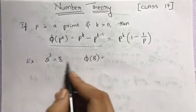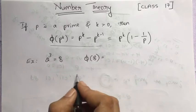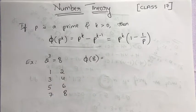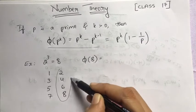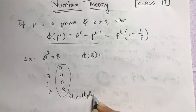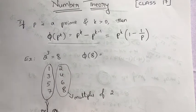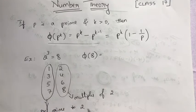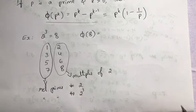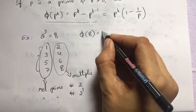Now, 2³ is 8. From 1 to 8, list out the numbers: 1, 2, 3, 4, 5, 6, 7, 8. Check these numbers — the multiples of 2 are not relatively prime to 8, while the others are relatively prime to 2, and in fact they are relatively prime to 2³. Counting them: 1, 2, 3, 4 — so there are 4 such numbers, giving phi(8) = 4.